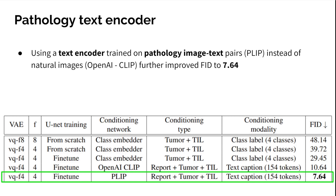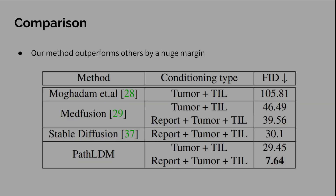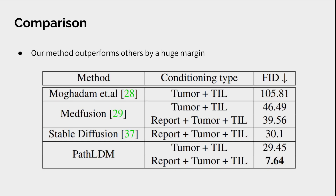To compare our method with other methods, we generate 10,000 synthetic images and compute the FID. PATH-LDM significantly outperforms other methods by a large margin; the next best performing method, stable diffusion, achieves an FID of 30.1. We also observe that training MedFusion with our text conditioning mechanism improved the FID from 46 to 39, highlighting the efficacy of our text summaries.